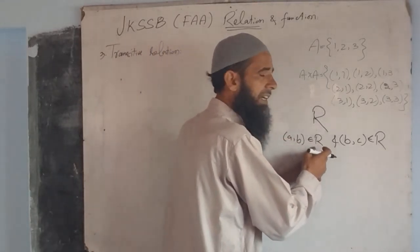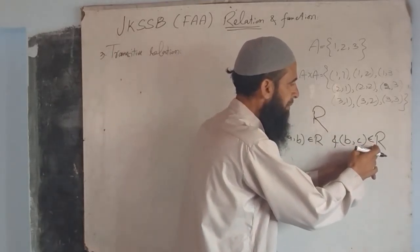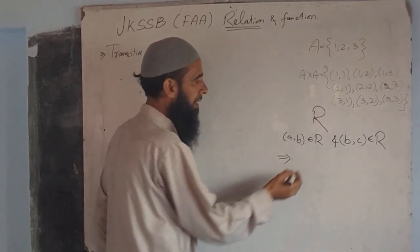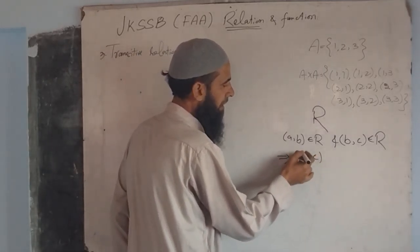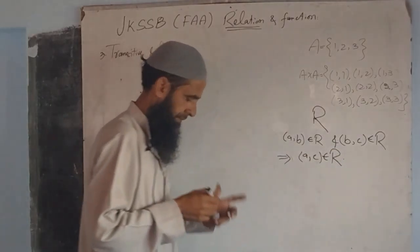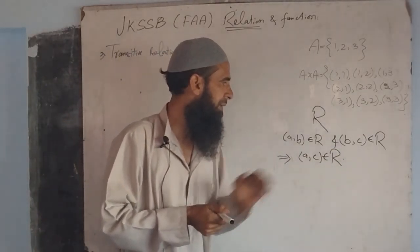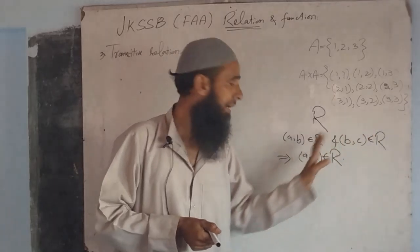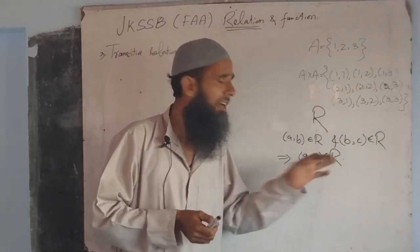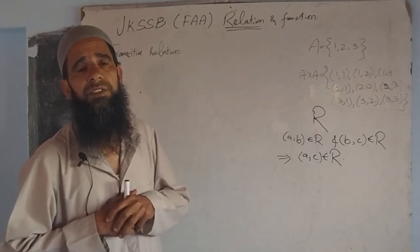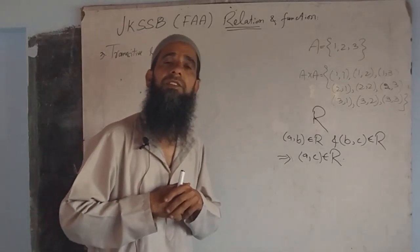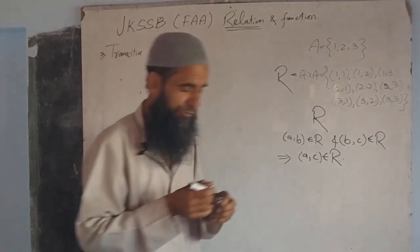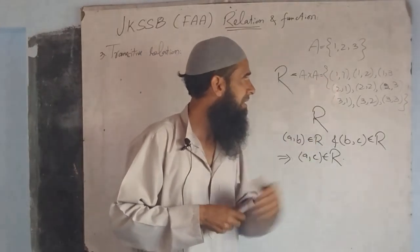If (a,b) is an element of R, and (b,c) is also an element of R, these together imply that (a,c) also belongs to the same relation R. Then we say that the relation is a transitive relation.